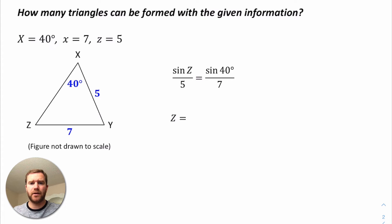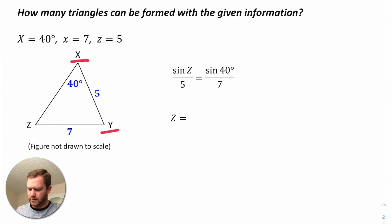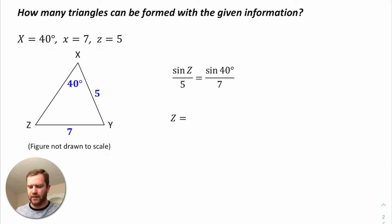In this video we're going to take a look at how to determine the number of triangles you can form when given information about a side-side-angle triangle. So let's go ahead and take a look at an example. In this first example we're given triangle XYZ. We're told that angle X is 40 degrees, side X is 7, and side Z is 5.